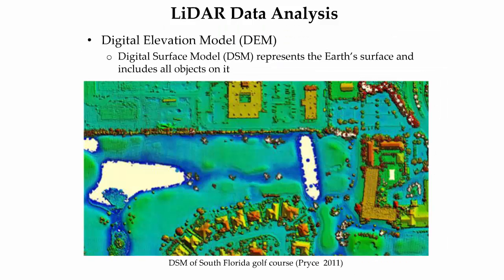The Digital Elevation Model, or DEM, is the core product derived from LiDAR point clouds. DEM applications are numerous, ranging from hydrological modeling to landscape visualization. These applications will be explored further in the fourth RLO in this LiDAR remote sensing series. There are two primary classifications of DEMs. The first is the Digital Surface Model, or DSM. DSMs represent the Earth's surface and include all objects on it, such as buildings, vegetation, roads, and natural terrain features. The image shows a DSM for a golf course in South Florida.